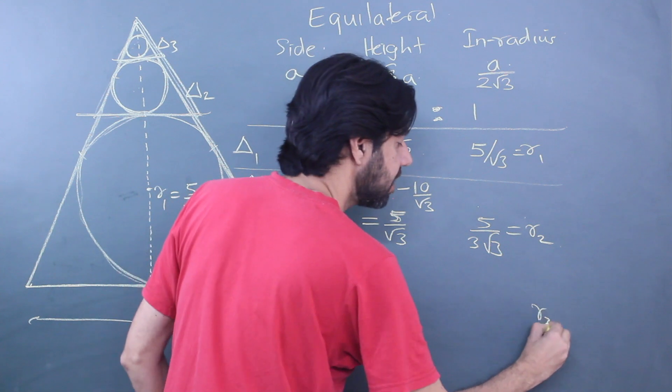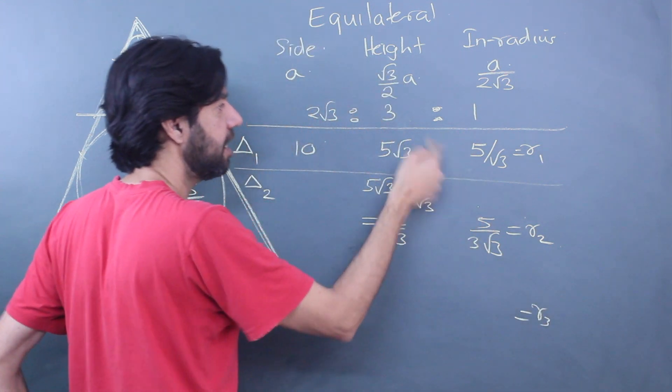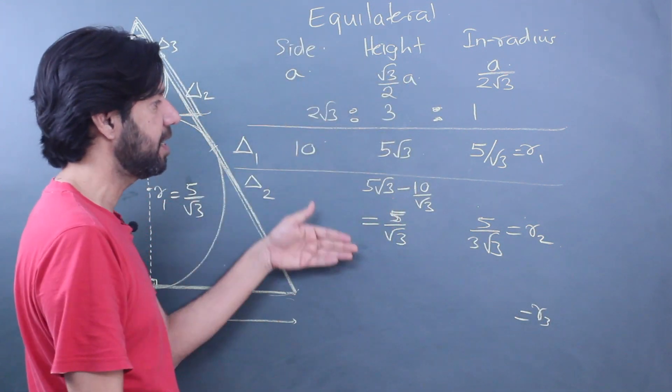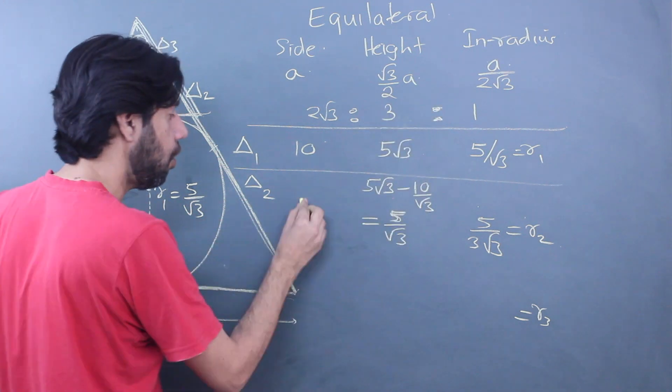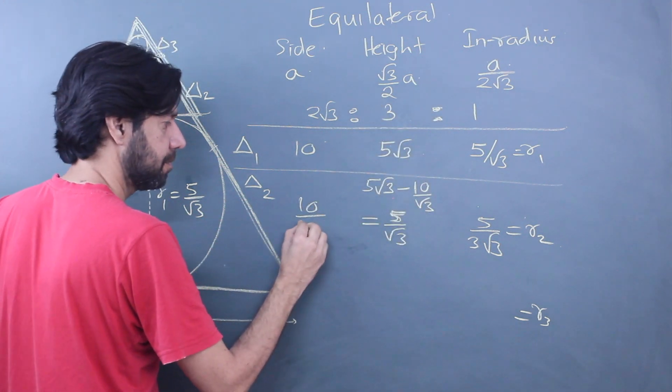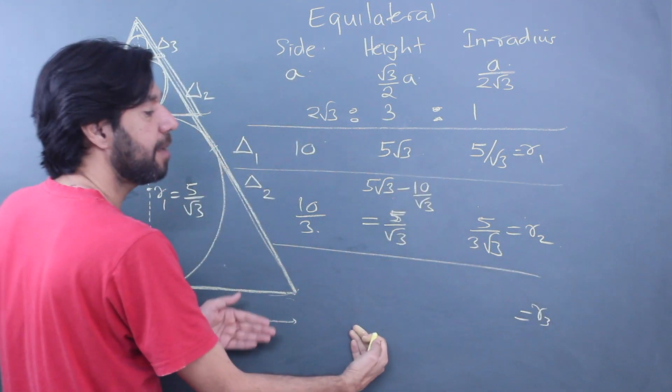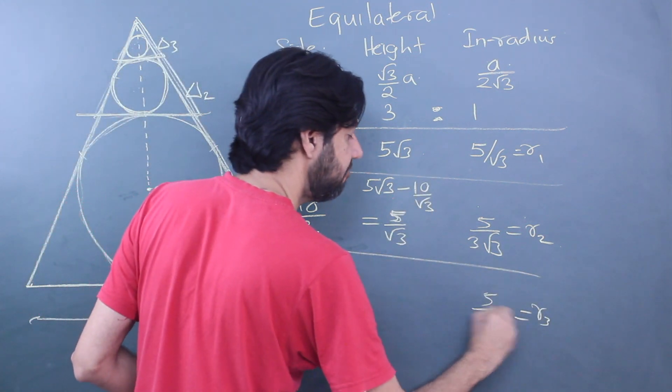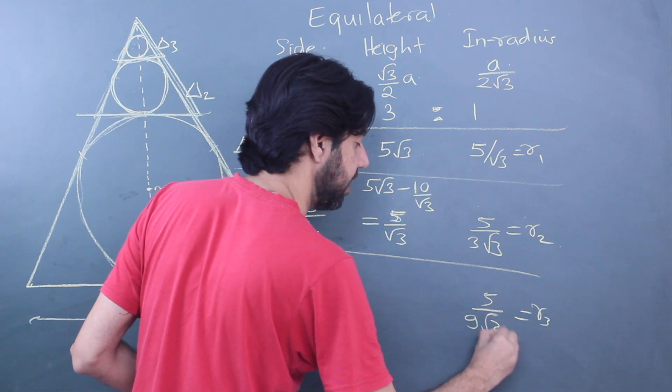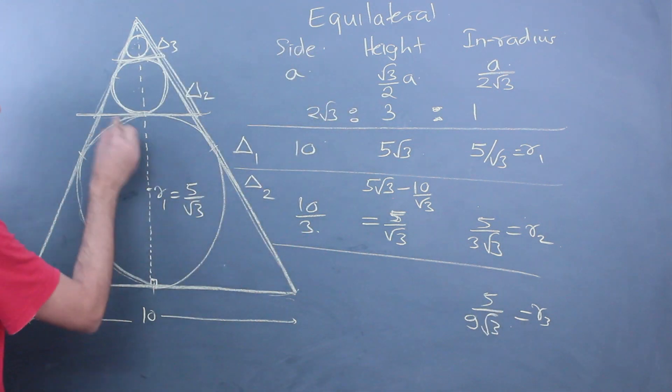Everything in triangle 3 is going to be divided by 3. All of it is divided by 3. So in triangle 3 also, you would be dividing everything again by 3. So that is going to be 5/(9√3).